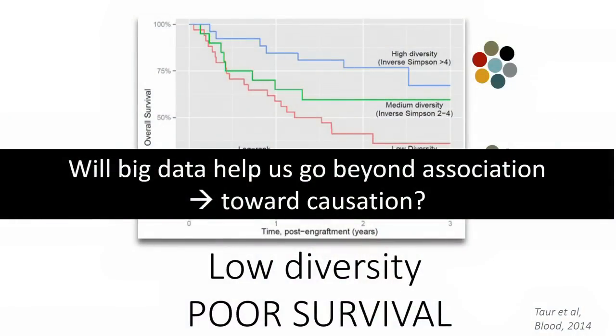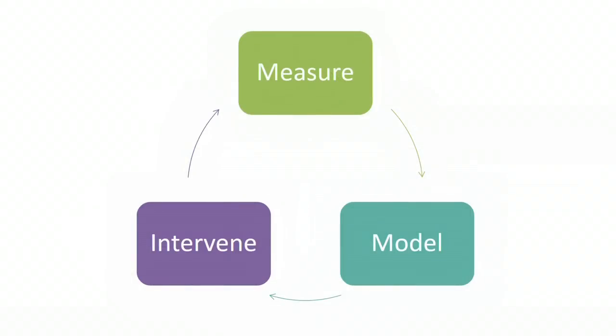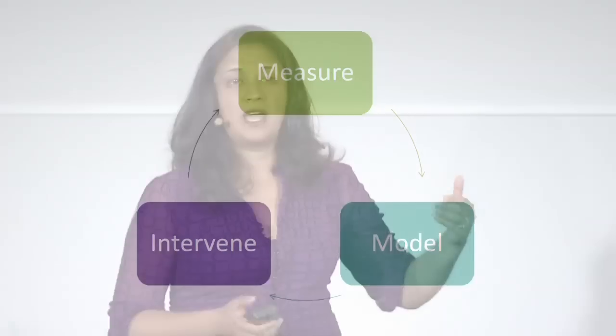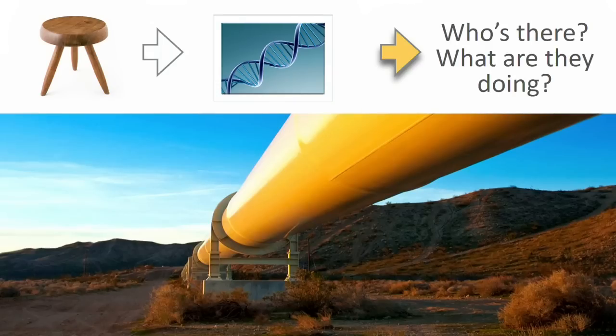This is exciting, but how can we use big data to go beyond association toward causation? We need to go from measuring to modeling to intervening — a cycle to use data to improve health. We take stool, extract DNA, sequence it, and ask: who's there, what bacteria are present, and what are they doing? To analyze this deluge of information, we build computational pipelines to deal with both structured and unstructured data problems.